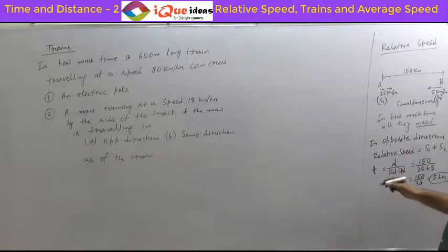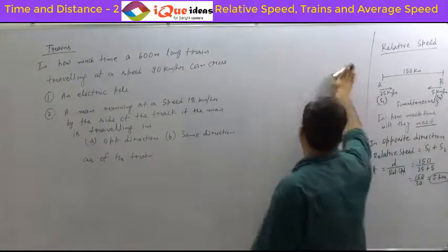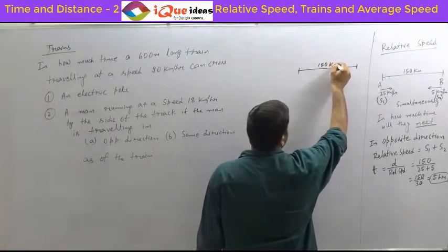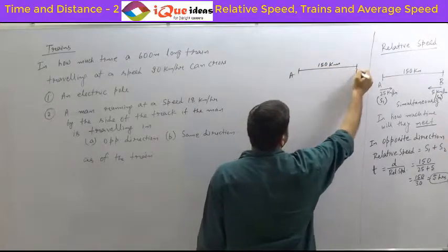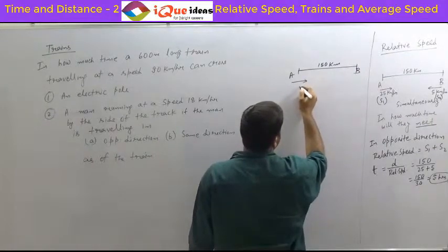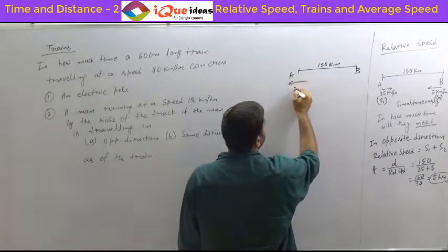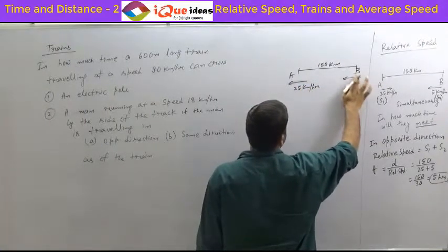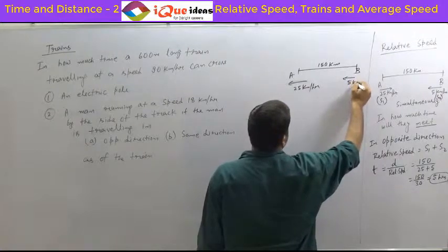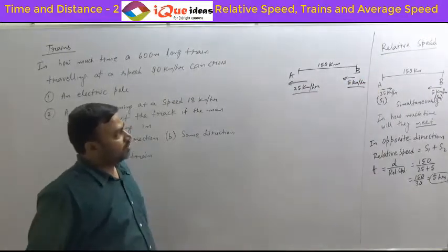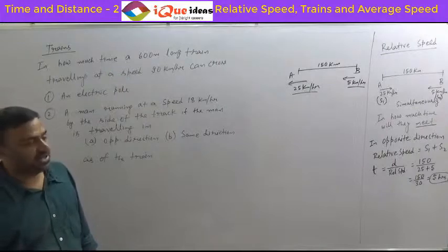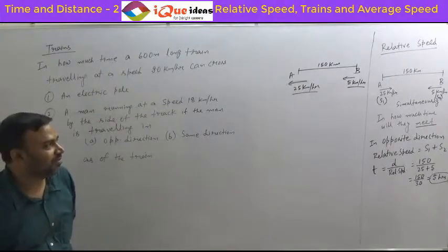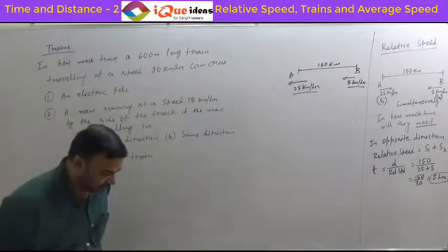So this is in the opposite direction. Similarly, we will take another case of same direction, same situation: 150 kilometers. Suppose this is A and this is B. A person starts from A in this direction at a speed of 25 km per hour, and another person starts from this point in the same direction at 5 km per hour. Some of you might calculate: same direction, so subtract — 25 minus 5 is 20, giving 150 by 20 is 7.5 hours. That is wrong.